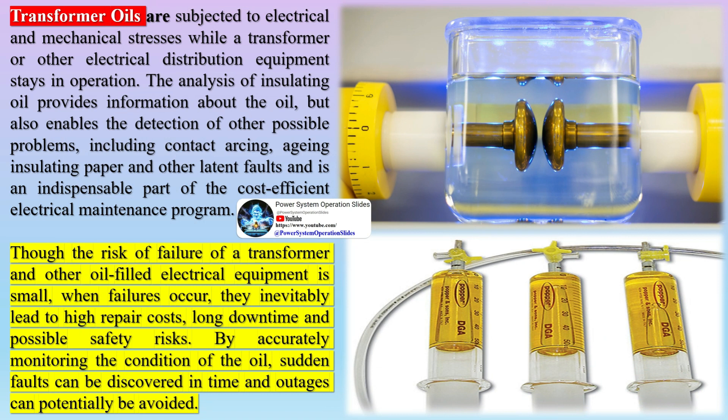Properties of transformer oil or insulating oil: the following physical parameters should be considered to analyze the serviceability of oil — color and appearance, density, interfacial tension, viscosity, flashpoint, and pour point.